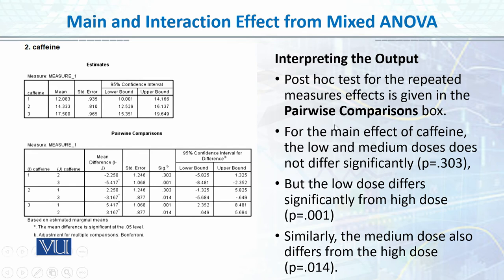इसके बाद हमारे पास caffeine के estimates दिये हैं जो हमने descriptives calculate किये हैं — mean कितनी है तीनों levels में, standard deviation कितनी है, और confidence interval के lower और upper limits। जब हमने post-hoc test check किया था कि levels दो से ज्यादा हों तो हमें post-hoc analysis run करनी होती है ताकि पता चले कि तीन groups में से कौन से दो significantly different हैं। Pairwise comparison यही करता है।